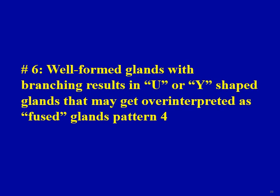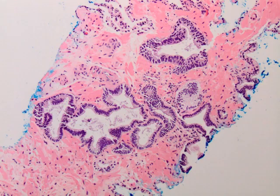Pitfall six: large well-formed glands may result in U- or Y-shaped glands that get over-interpreted as fused gland pattern 4. Here is an example of well-formed large glands showing a branching pattern — this is branching, not an evidence of fusion. Again, this would be graded as Gleason 3+3=6.